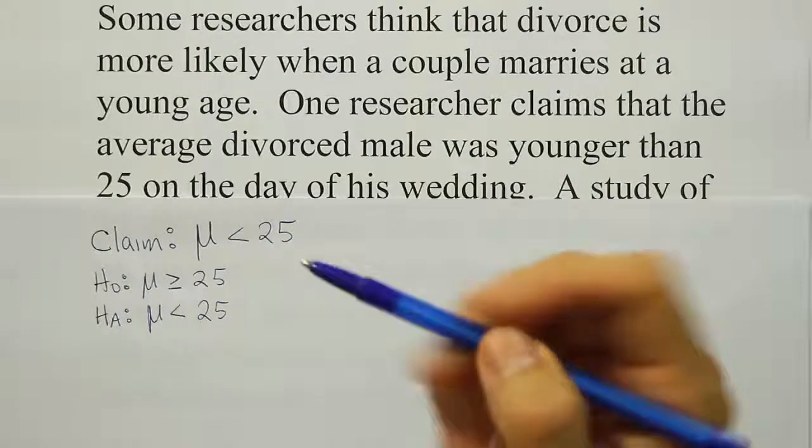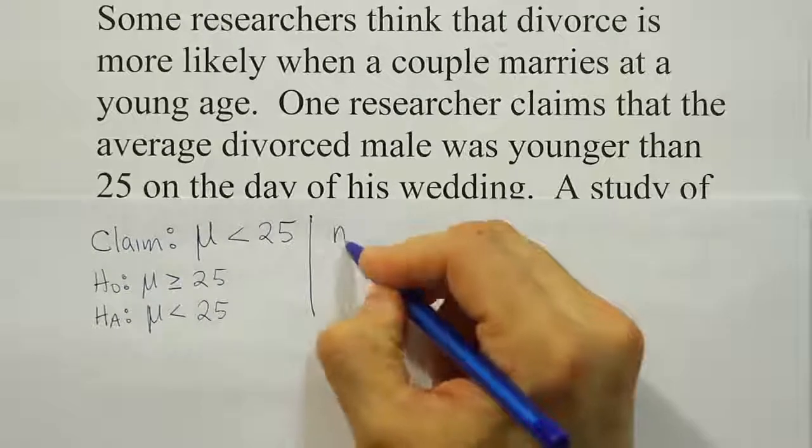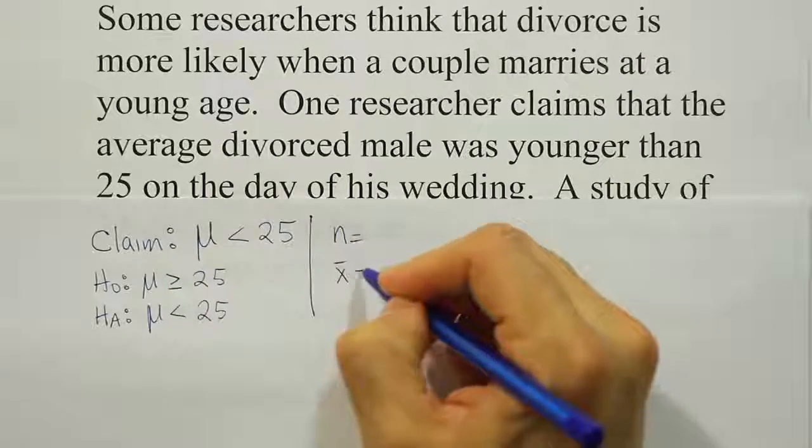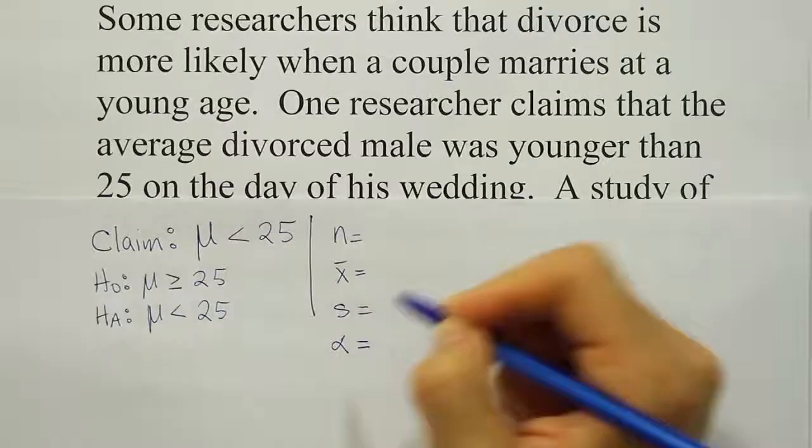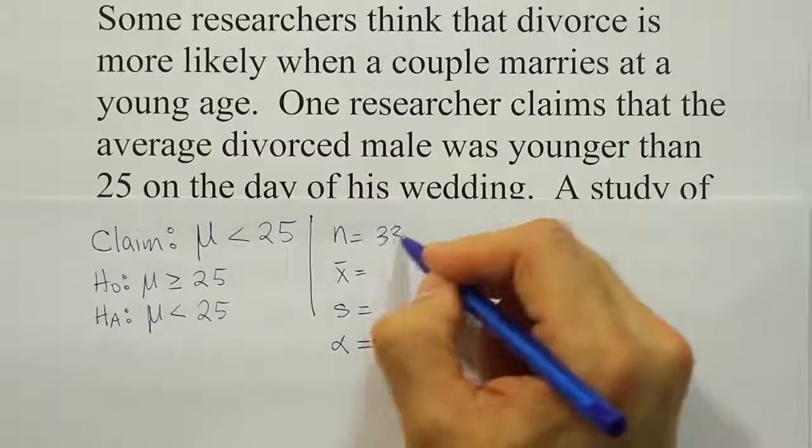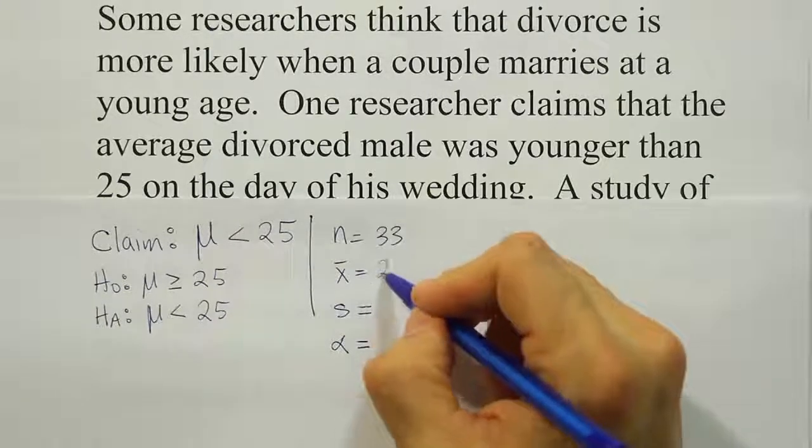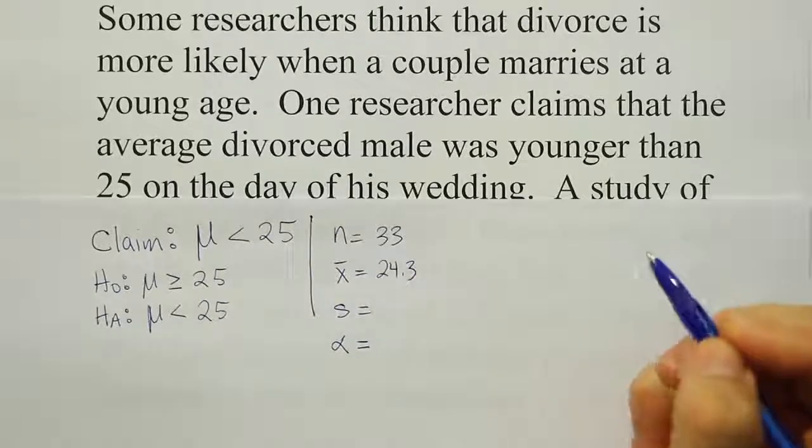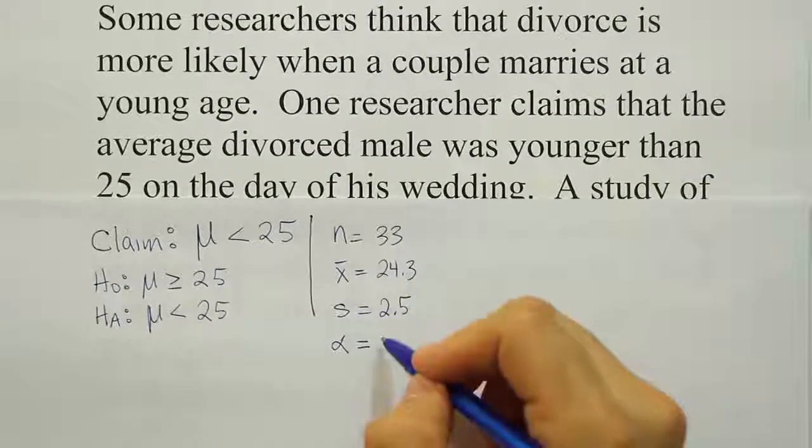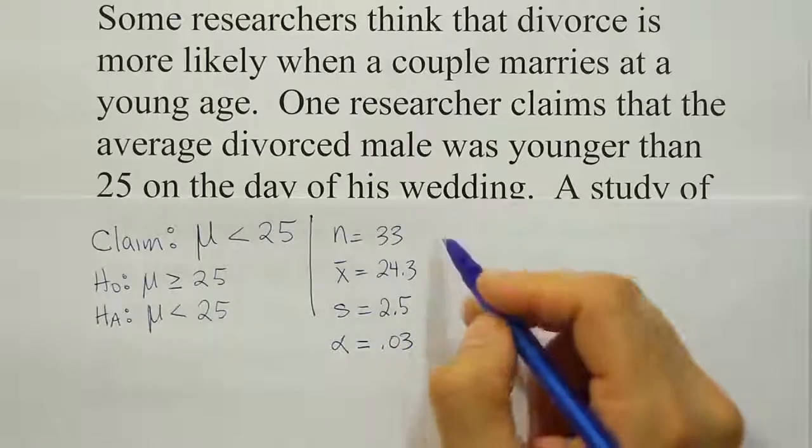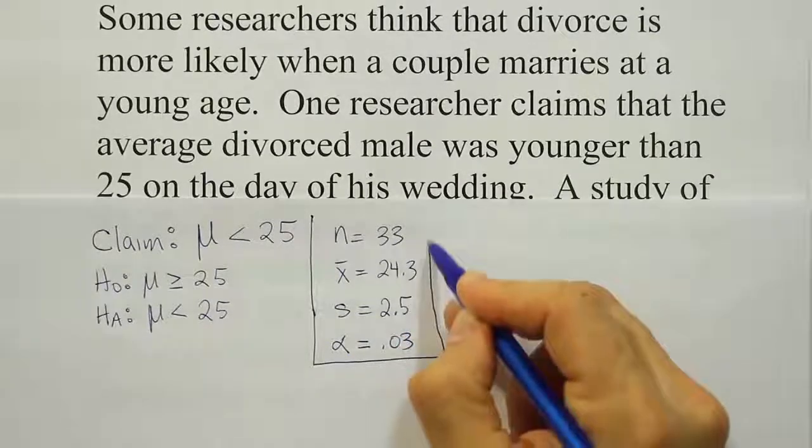So we know that the data involves an n, an x-bar value, a standard deviation, and an alpha. So there were 33 people in the study. Their average age was 24.3 and their standard deviation was 2.5. The significance level was 0.03. So there's your data that you're going to need for the calculator.